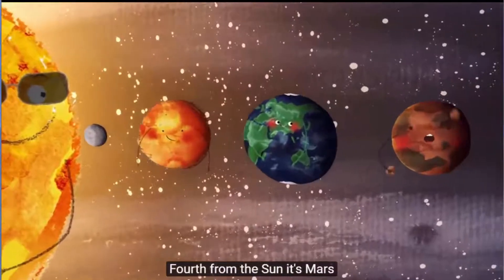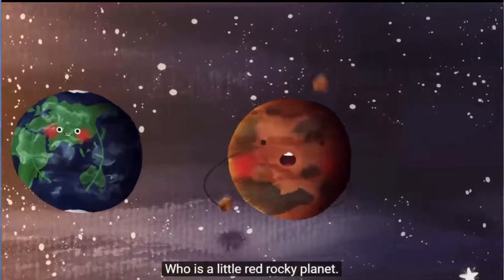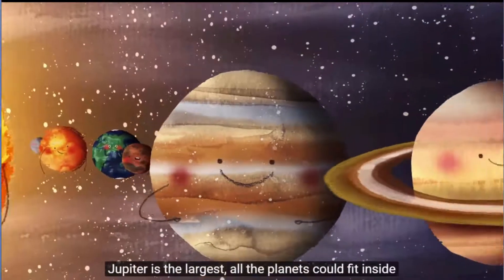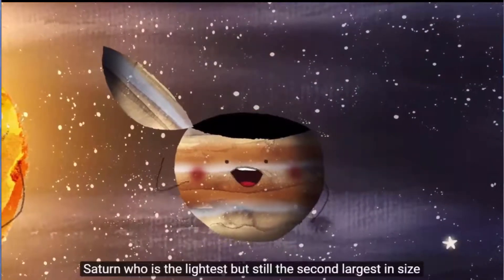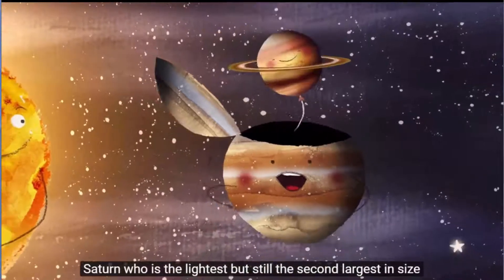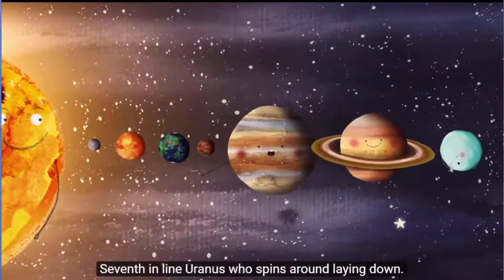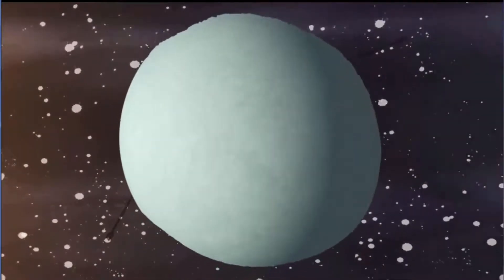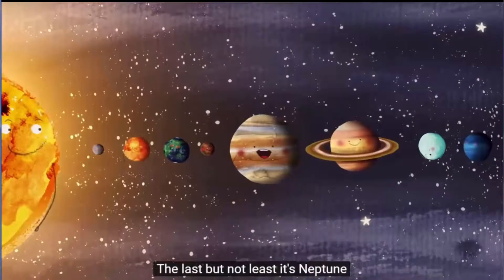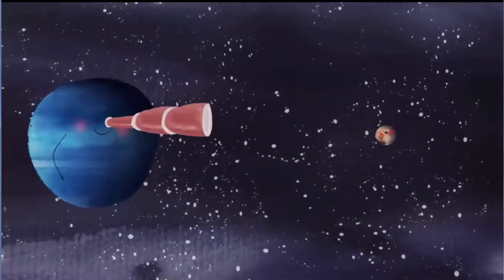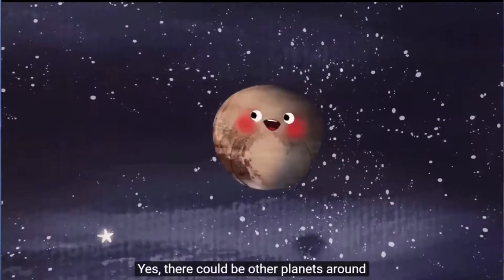Fourth from the Sun it's Mars who is a little red rocky planet. Jupiter is the largest, all the planets could fit inside. Saturn who is the lightest but still the second largest in size. Seventh in line Uranus who spins around laying down. Last but not least it's Neptune, but there could be other planets around.